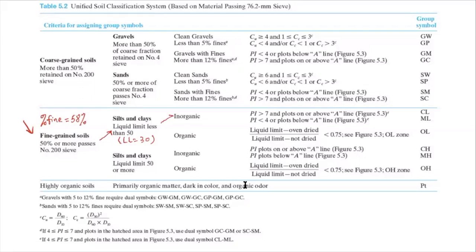And the next is that PI. For this problem, PI is 10. And then we also need to check if it plots above A line. There's an N here. So you need to meet both criteria if you want to pick CL.